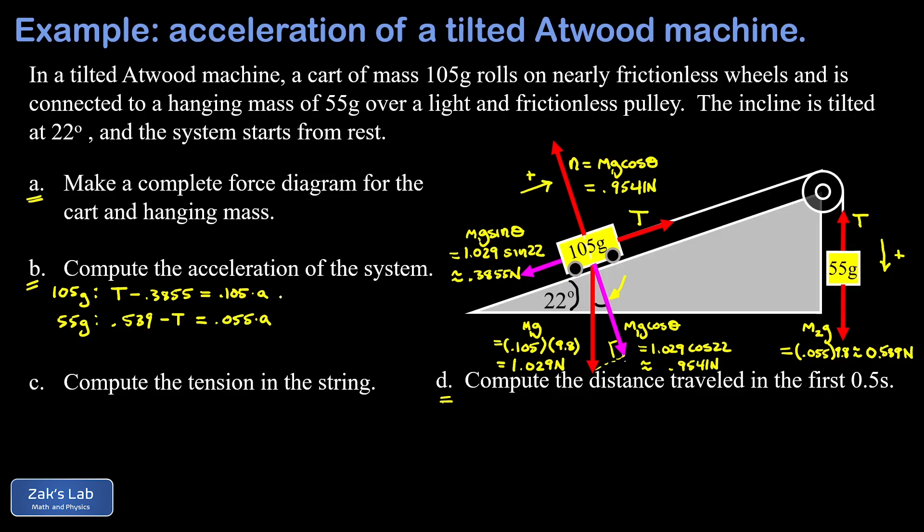Now this is a system of two equations and two unknowns, and if I add them the T's are going to cancel on the left hand side. This leaves me with 0.539 minus 0.3855 equals 0.16 times the acceleration. We do the subtraction on the left hand side and divide by 0.16, and we've got our acceleration: 0.959 meters per second squared, rounding to our traditional three significant digits.